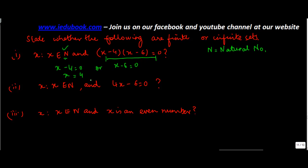So x is equal to 4 and x is equal to 6, or this set will become {4, 6}. How many numbers are there in this set? There are two.